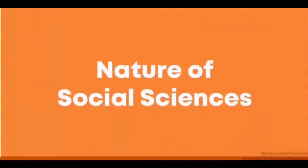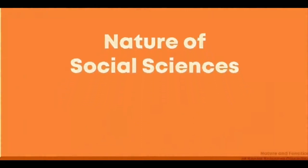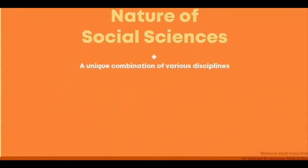Let us proceed to the understanding of the nature of the social sciences. First, a unique combination of various disciplines. These disciplines include anthropology, economics, psychology, sociology, linguistics, political science, demography, geography, and history. They have distinct functions in dealing with societal problems.